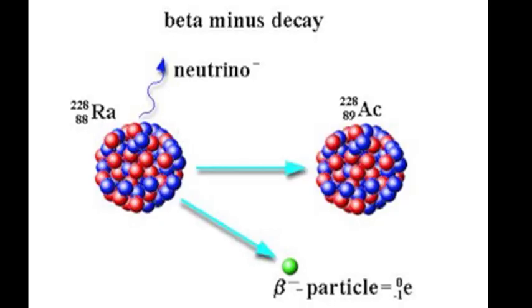There are two types of beta decay, most commonly beta minus, which is the emission of an electron, or beta plus, the emission of a positron. Beta minus emission occurs when the neutron-proton ratio is too high, as in this example of radium decay. In effect, one of the neutrons in the nucleus splits to become a proton, which remains in the nucleus, and an electron, which is emitted at high velocity.